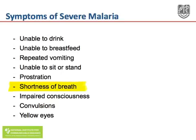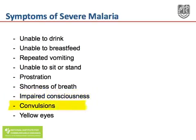Shortness of breath is a very important symptom of complicated malaria, and cerebral malaria presents with impaired consciousness, an agitated child, or even the presence of convulsions. Yellow eyes and dark urine may also be an indication of the presence of severe malaria.